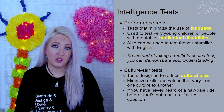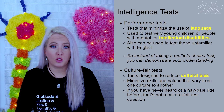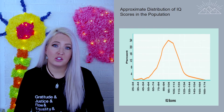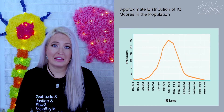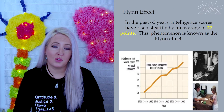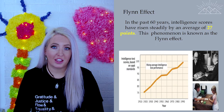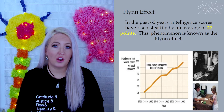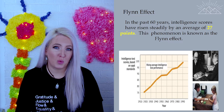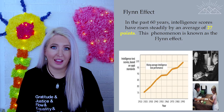A few interesting things to note about IQ tests: scores do form a standard bell curve, but we have also seen that scores are increasing with each generation. This is known as the Flynn effect. In the past 60 years, the average IQ score has gone up by about 27 points, which raises the question — are we getting smarter, or is the test becoming less accurate?